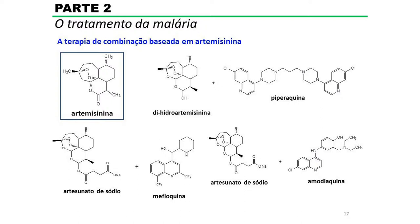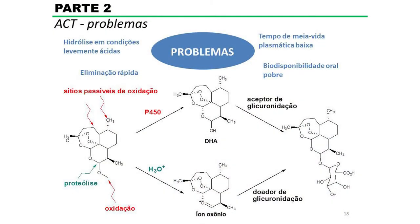Alguns exemplos de combinações: a di-hidroartemisinina combinada com a piperaquina, que é o tratamento de primeira escolha para casos não complicados de malária; e outras opções incluem o artesunato de sódio com a mefloquina ou com a modiaquina. No entanto, apesar desses derivados serem bastante eficientes, eles apresentam alguns problemas: são hidrolisados em condições levemente ácidas, são rapidamente eliminados do organismo, o tempo de meia-vida plasmática é baixo, e a biodisponibilidade oral é pobre. Um derivado pode sofrer proteólise em meio ácido levando à formação de um oxônio, que funciona como doador de glicuronidação, levando a um conjugado rapidamente eliminado.